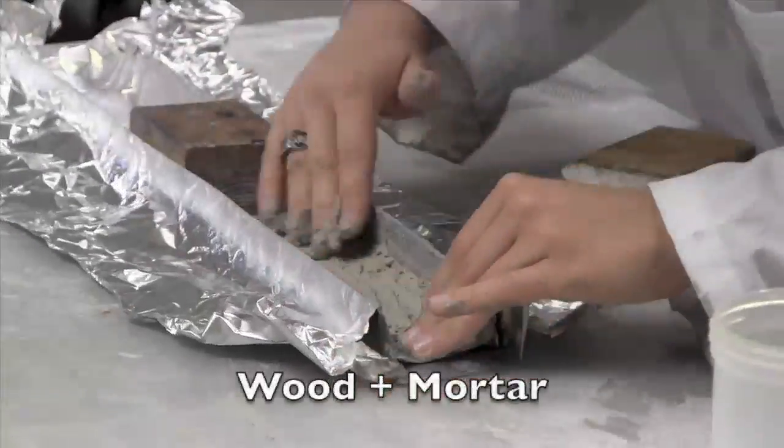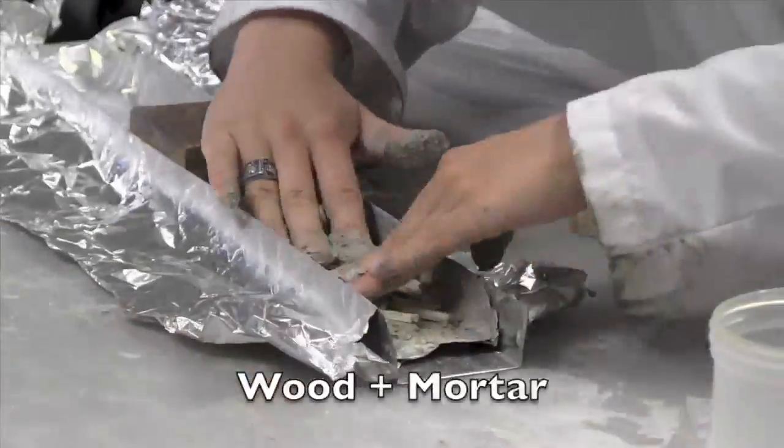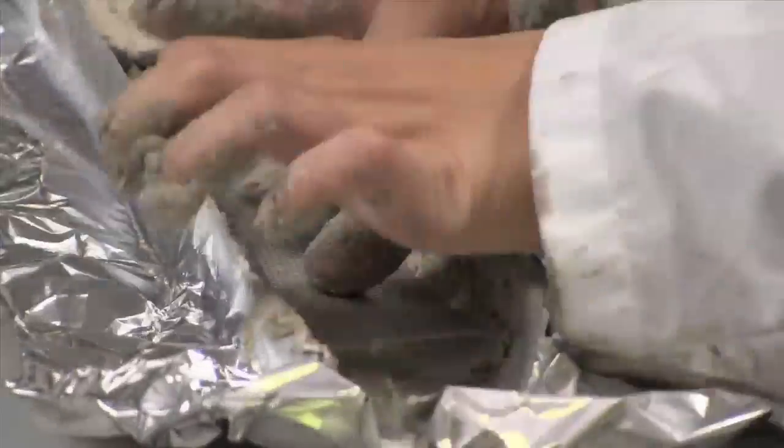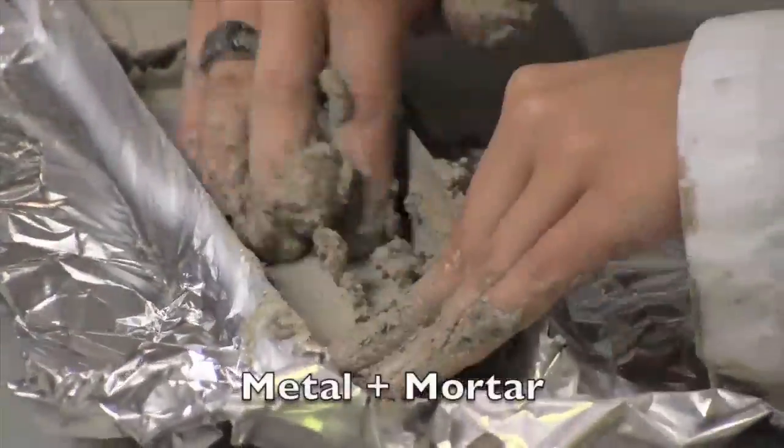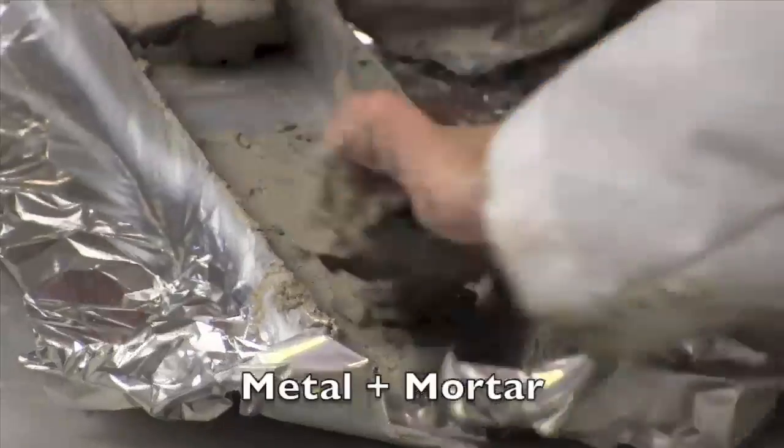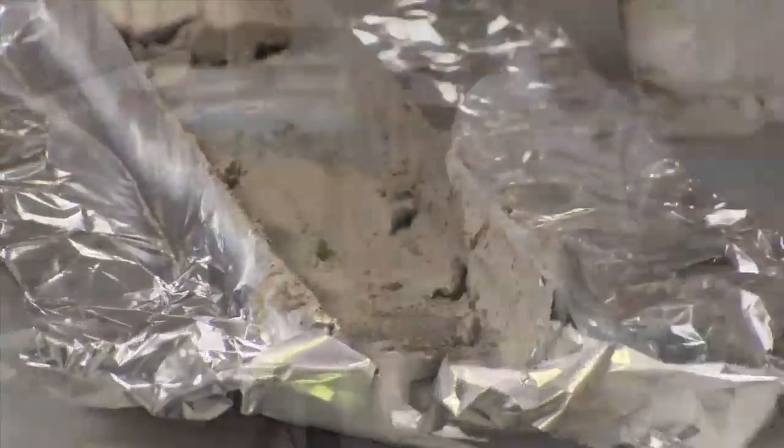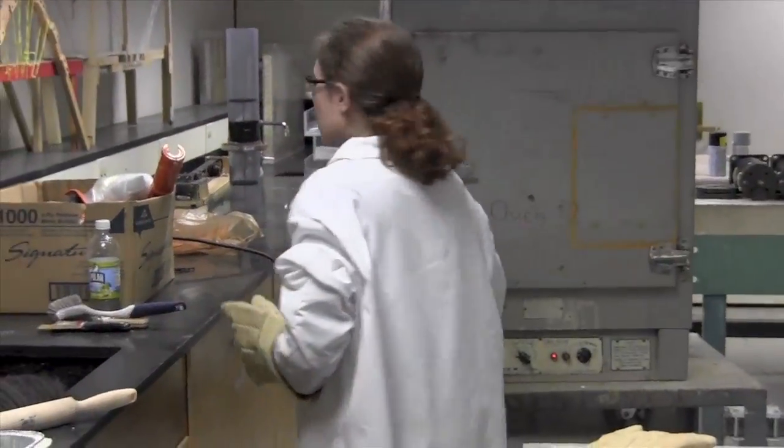You can see Jenny mixing the balsa wood with the mortar we created. And now, Jenny will do the same. She's mixing the screen with the mortar. Oh, it looks like we got to put it in the oven to make this material.